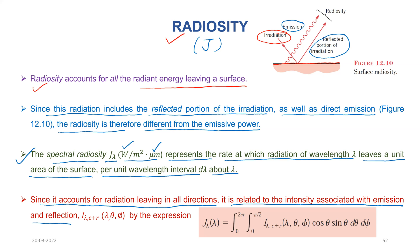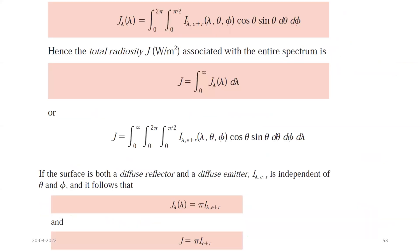The intensity of radiation related to emission as well as reflection is represented as i_lambda,e+r, which is dependent on lambda, theta, and phi. We can calculate the value of J_lambda from the expression: J_lambda equals the integral of i_lambda,e+r times cos(theta) sin(theta) d_theta d_phi, integrating phi from 0 to 2π and theta from 0 to π/2, to get the spectral radiosity.